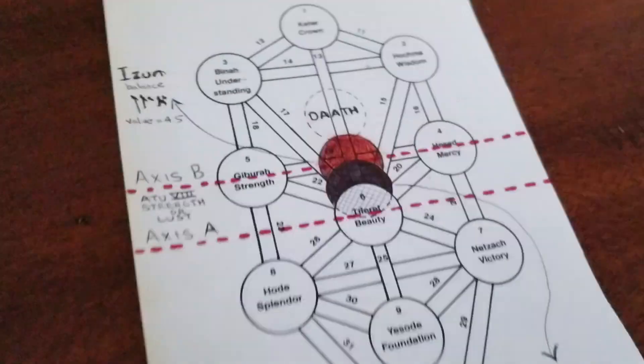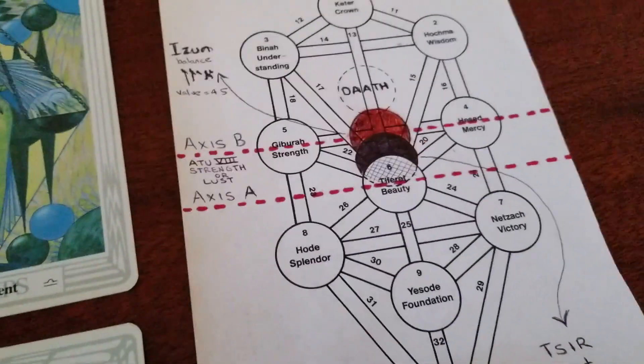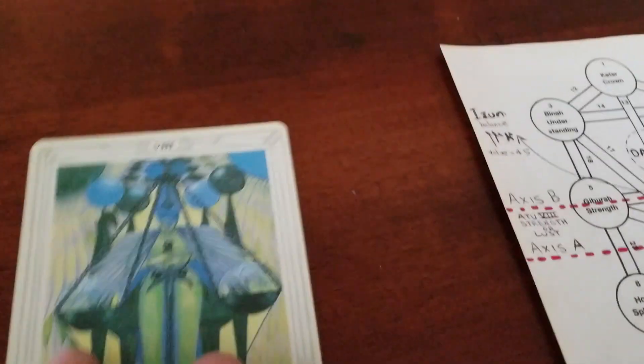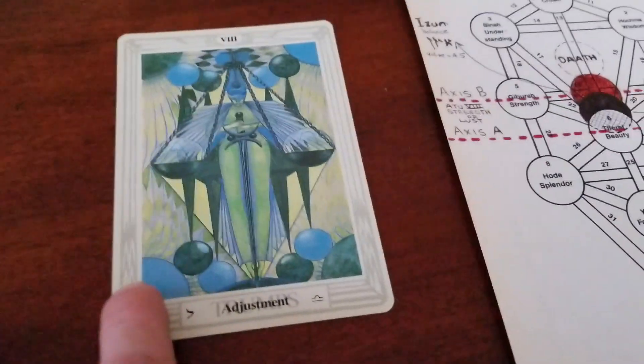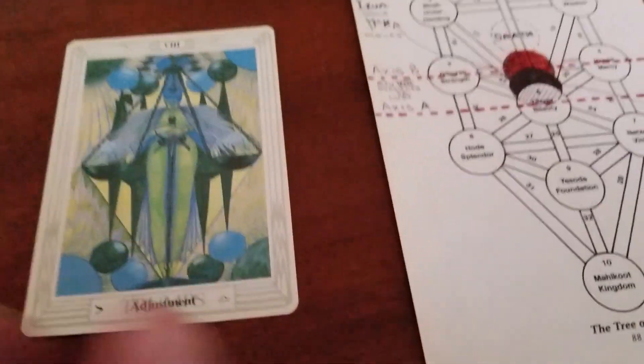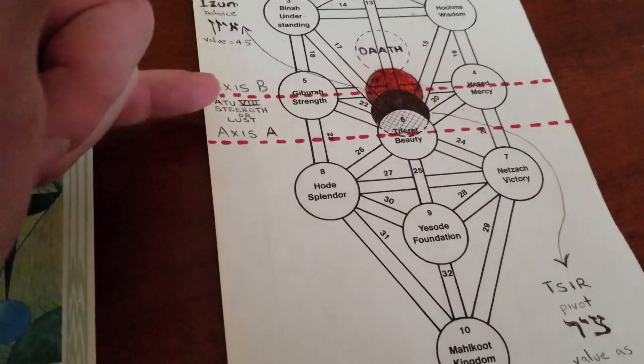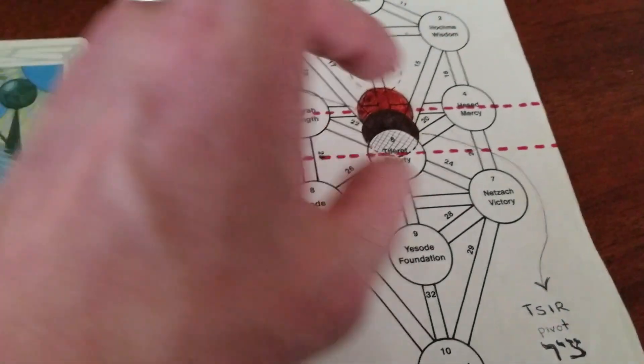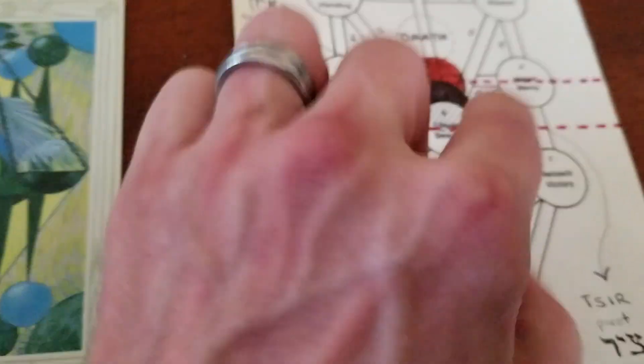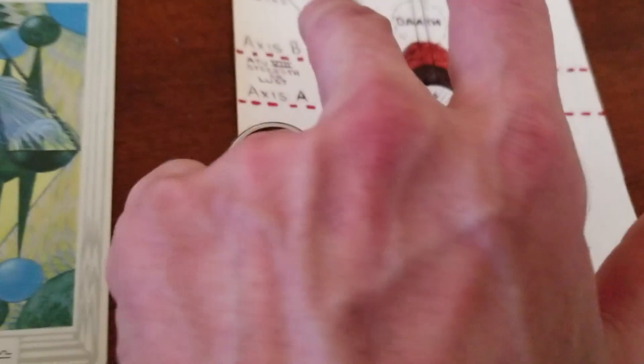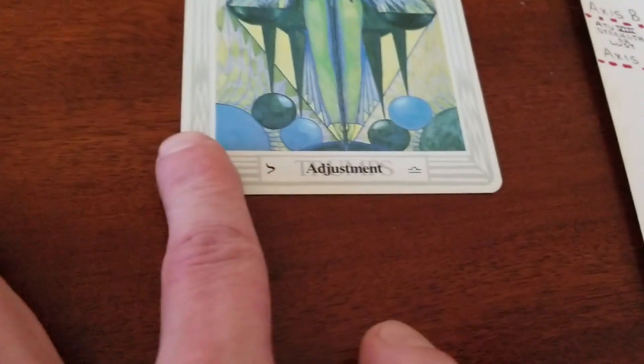So what do we have here? These are the only three trunks that represent the horizontal pathways. What's interesting is when I take these two off the table, this is the only one that's right here on axis B, which is how I derive Seer, which is the black sphere. This is the path of Justice, or more properly, Adjustment.